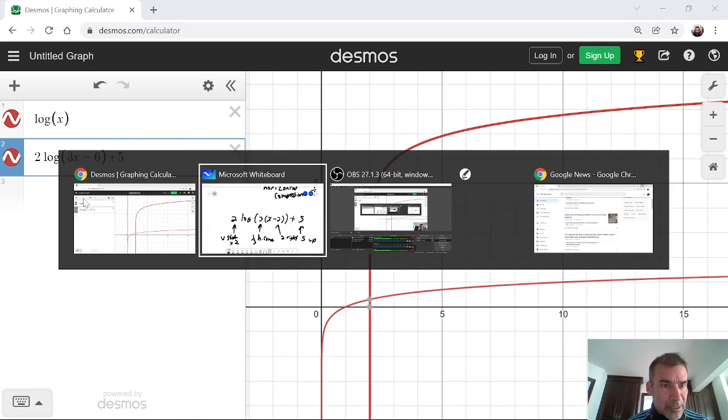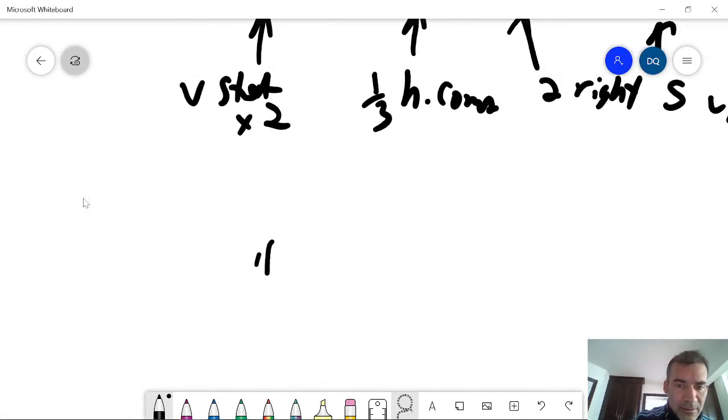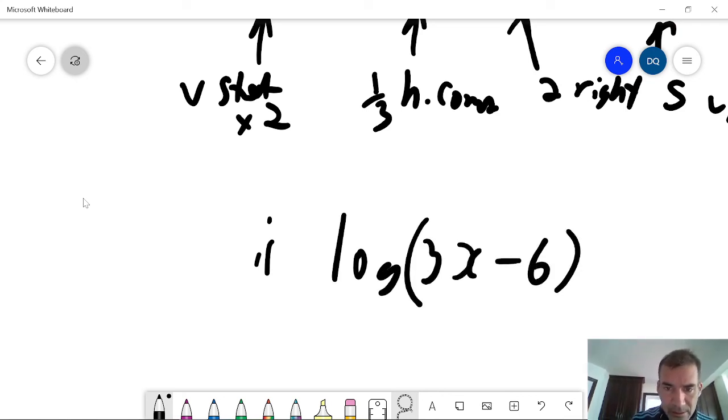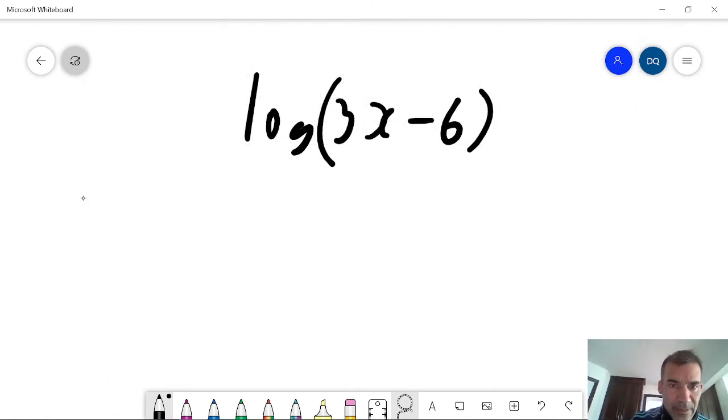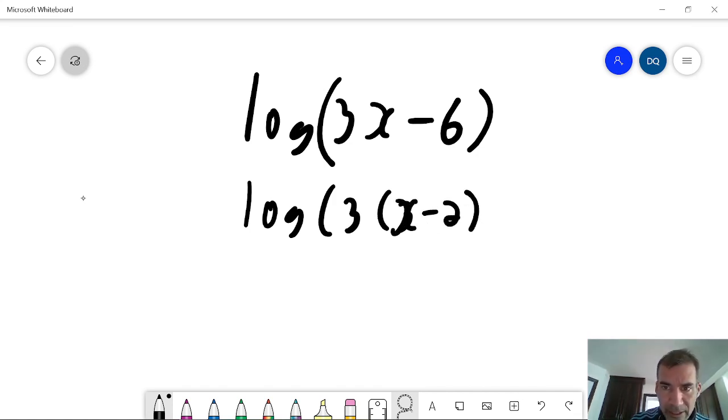See, 3x minus 6. So I'm taking the log of 3x minus 6. And that is the same as taking the log of 3 times x minus 2. Pull that out as a common factor because the number that's being directly subtracted from the variable accounts for the horizontal shift.